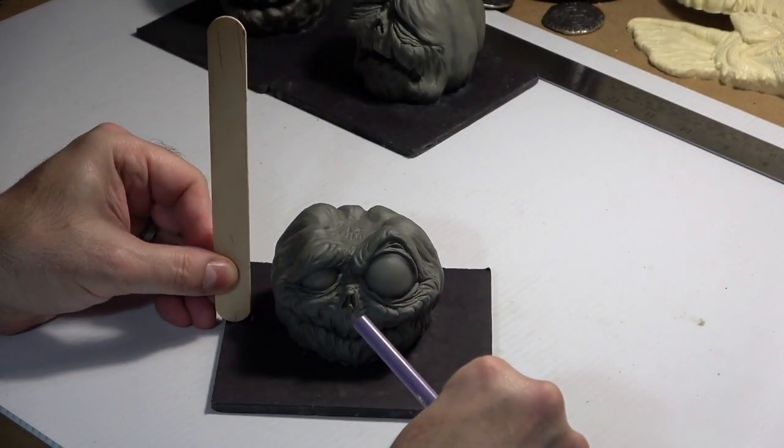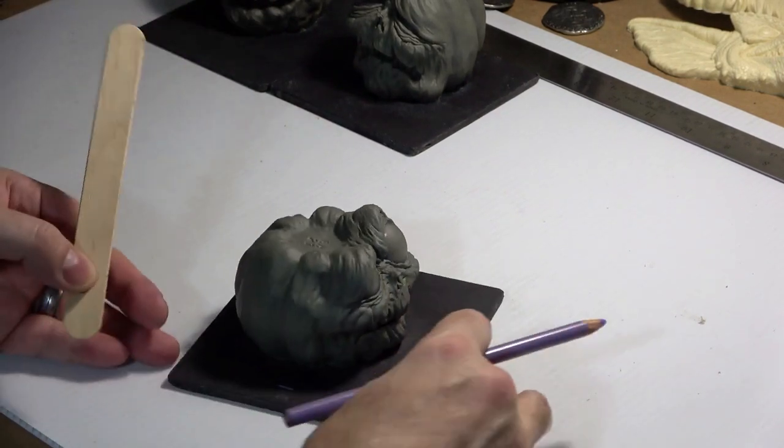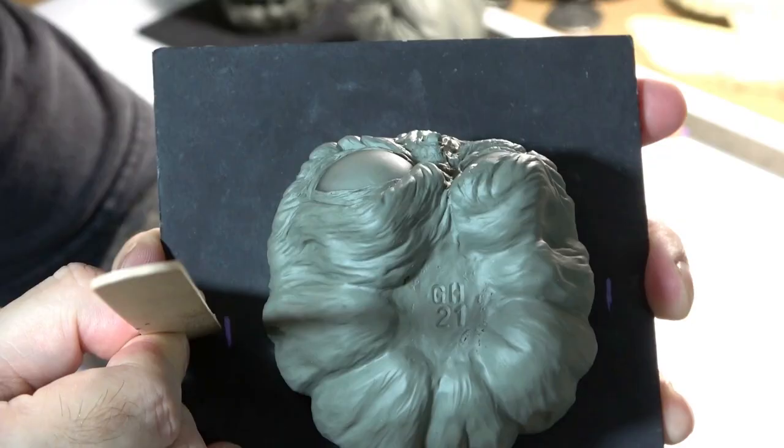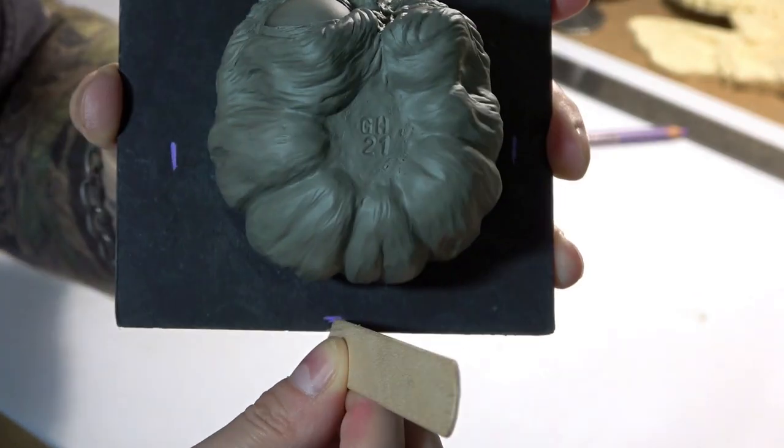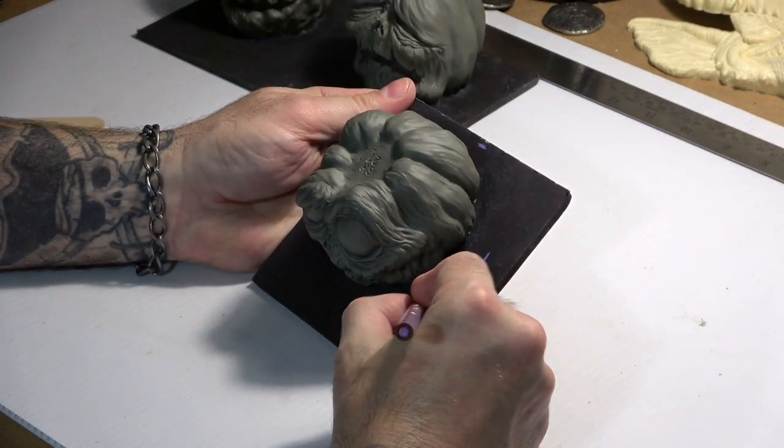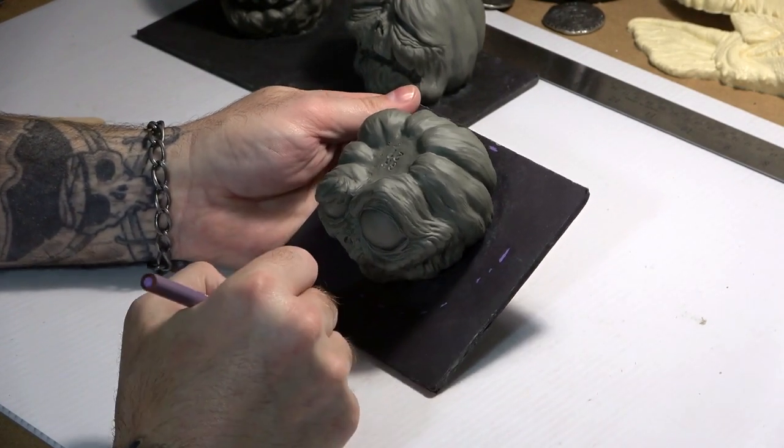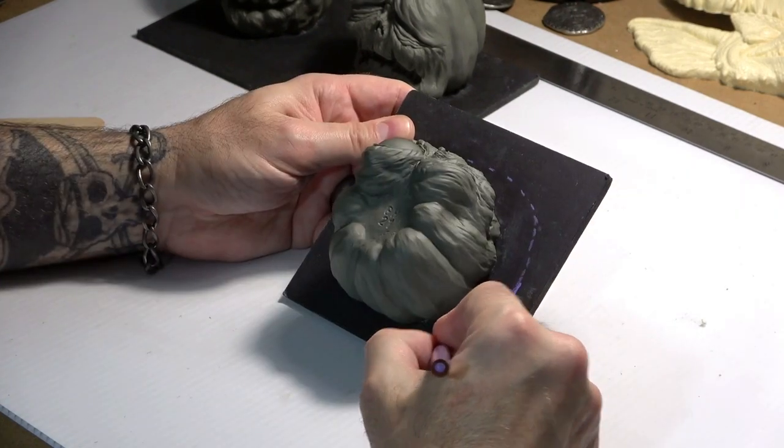First, I take a straight edge like this tongue depressor, hold it vertical, and move it out about three-eighths of an inch away from the sculpture. I just eyeball this. Then I make a mark on the base on all four sides. Now I connect the dots by making a dashed line all the way around, making sure it stays at least about three-eighths of an inch away from the sculpture.